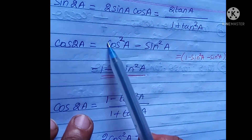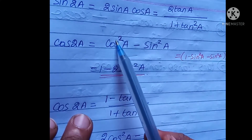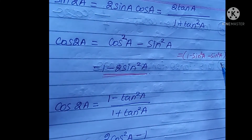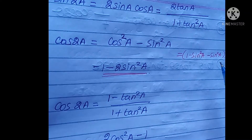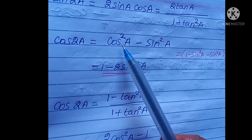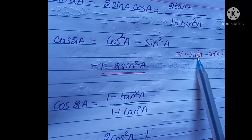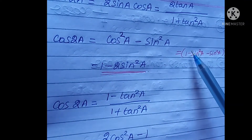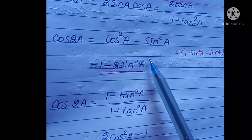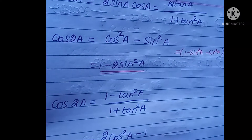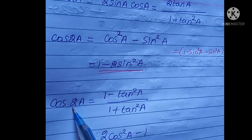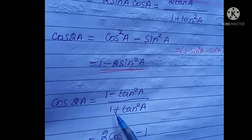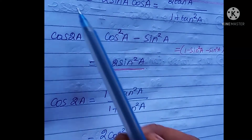Cos²θ + sin²θ = 1. cos²A = 1 − sin²A. So cos2A = 1 − 2sin²A, or cos²A divided by (1 + sin²A). The 2sinA formula is easy to memorize.